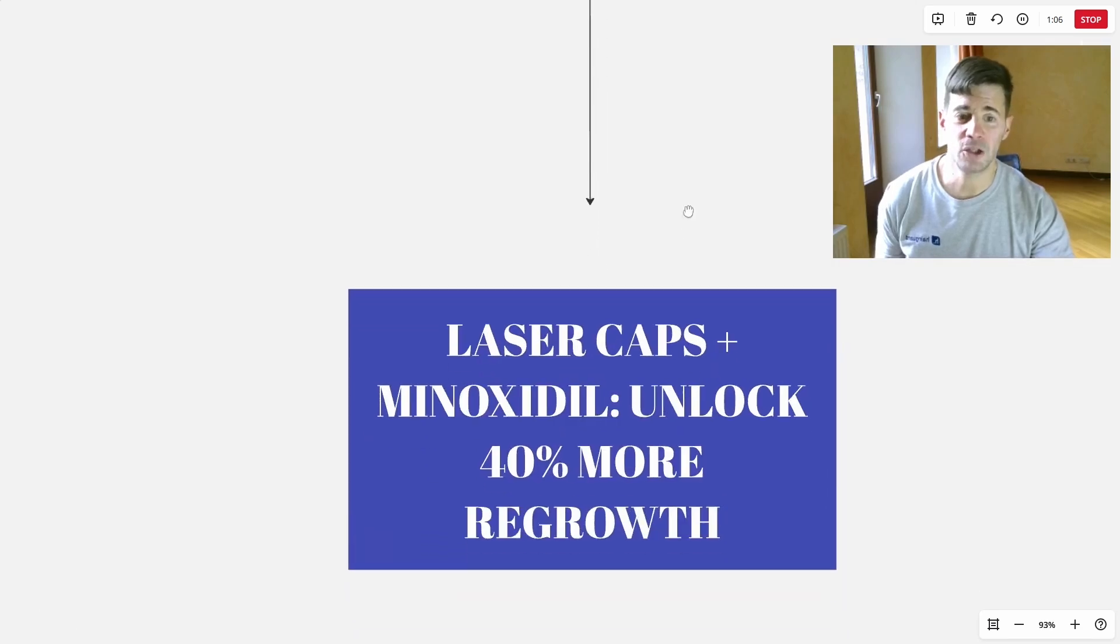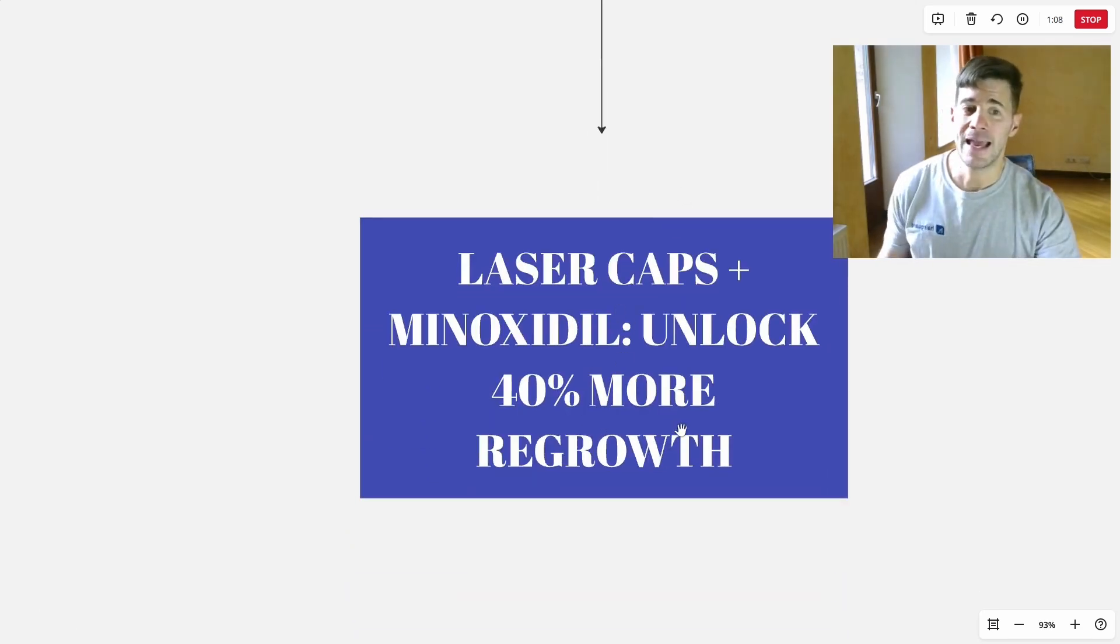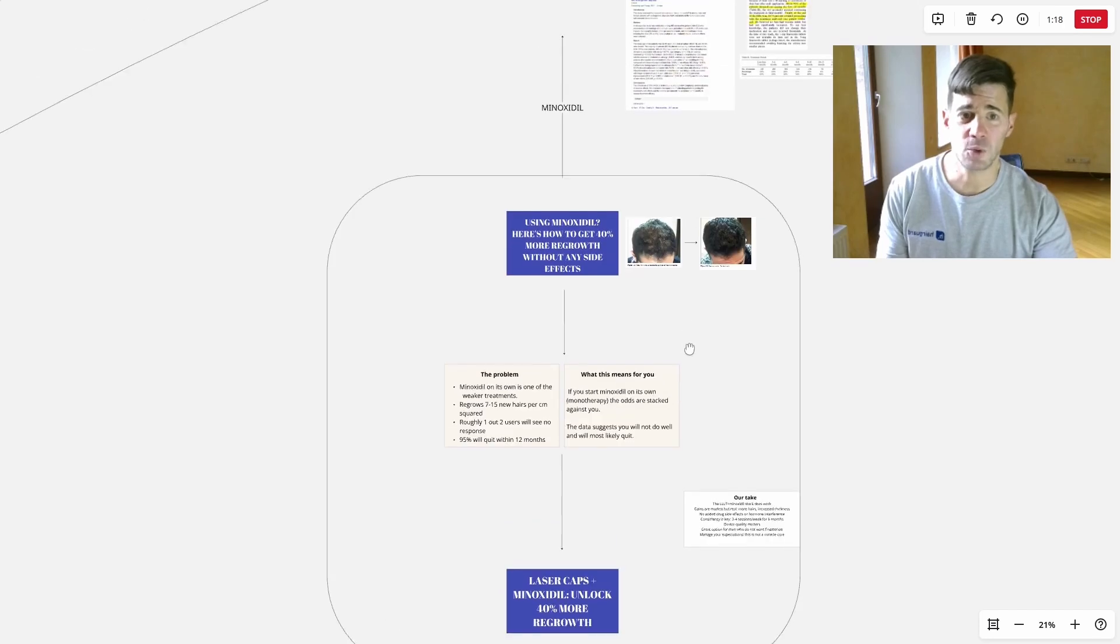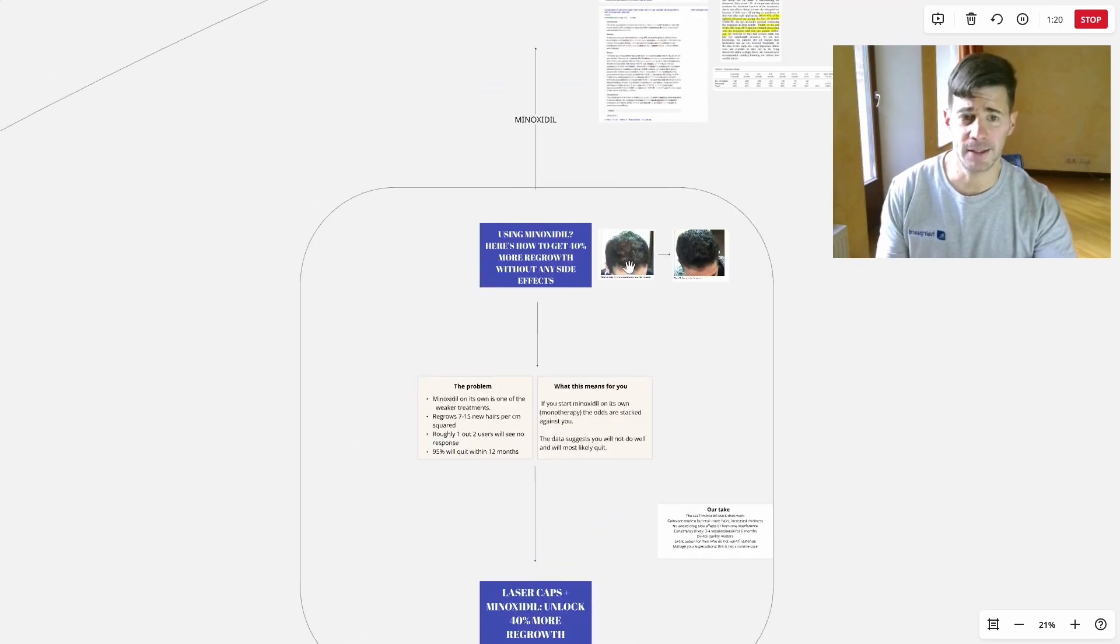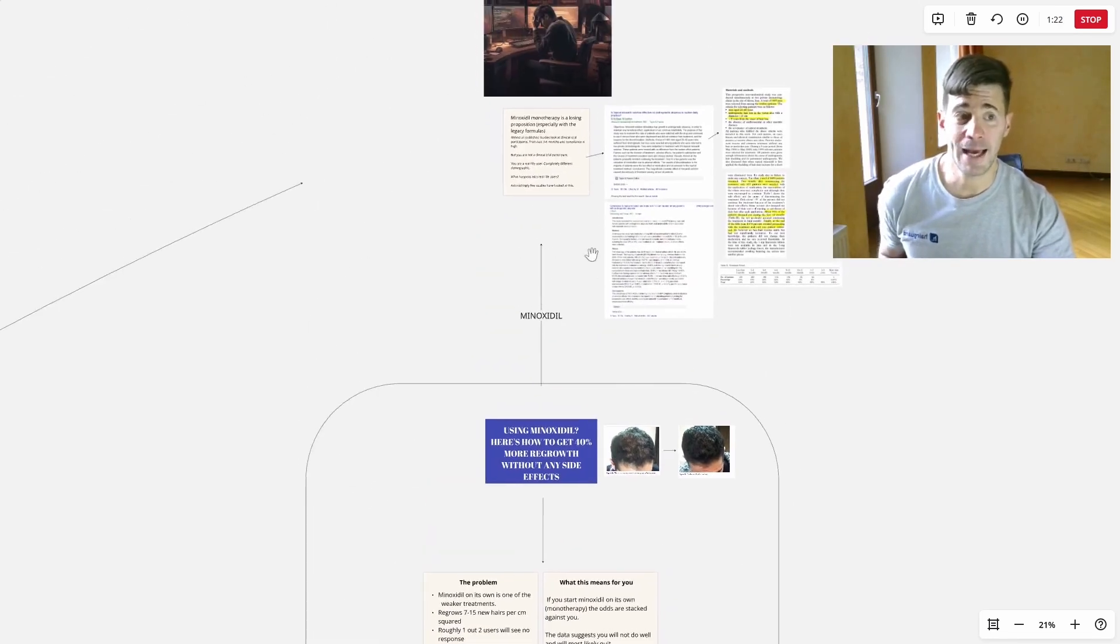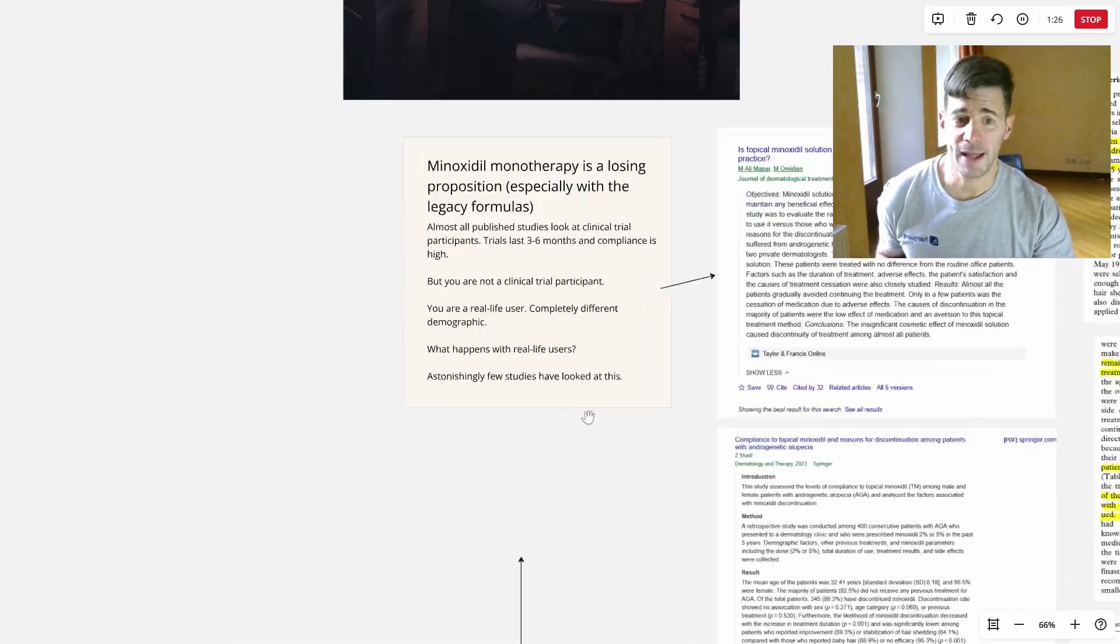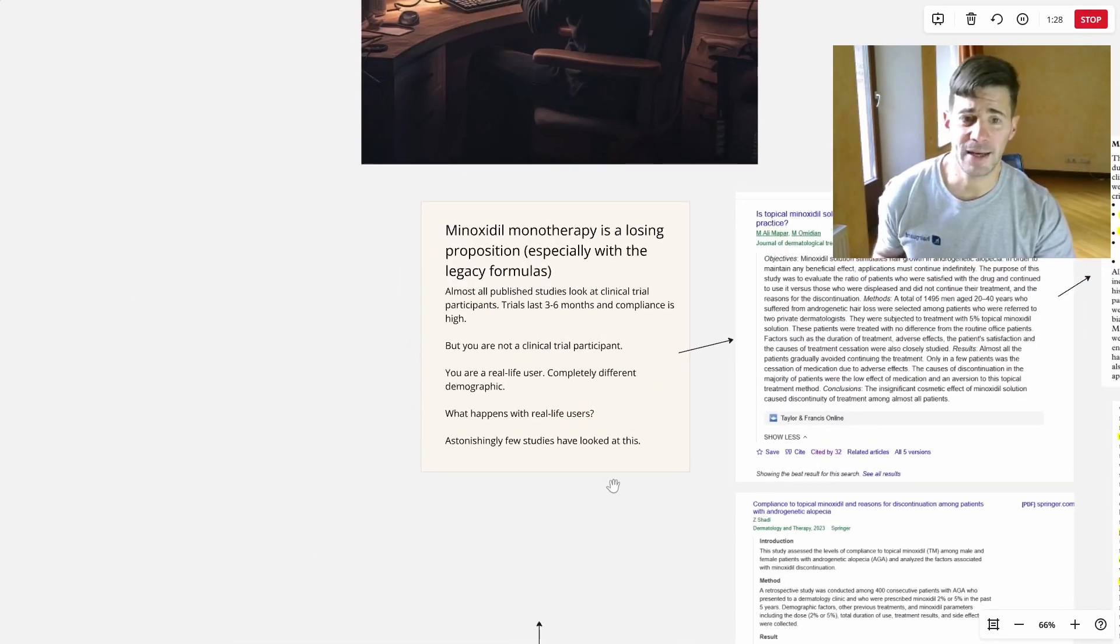So the solution we're going to be looking at in today's video is adding laser caps to Minoxidil to unlock that 40% extra regrowth. Today's video basically has two legs: the Minoxidil leg and the LLLT leg. First of all, we're going to look at Minoxidil. You obviously know what Minoxidil is, so I'm not going to repeat that here.